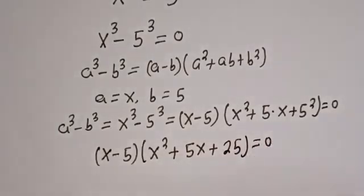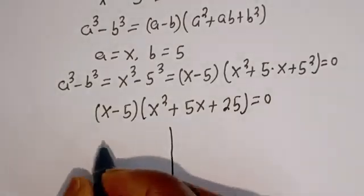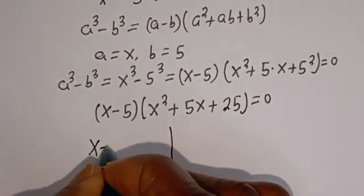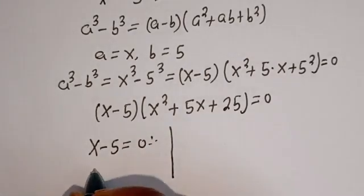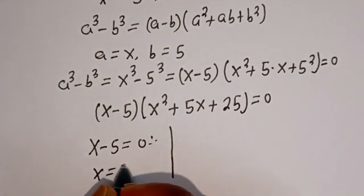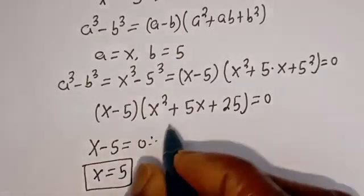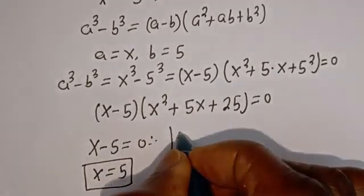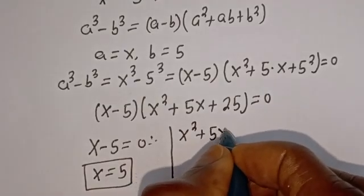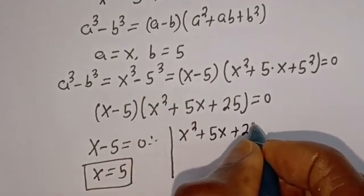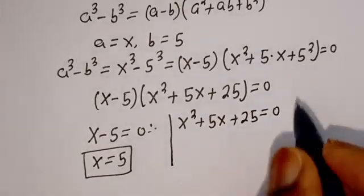There are two cases here. The first case is x minus 5 equal to 0, therefore s is equal to 5. The second case is s squared plus 5s plus 25 is equal to 0, which is a quadratic equation.